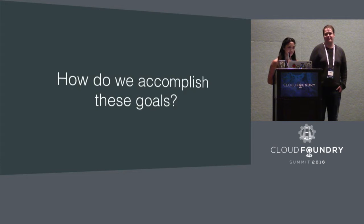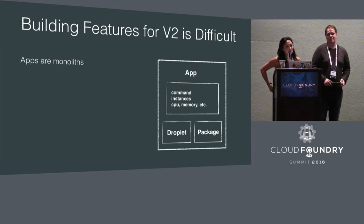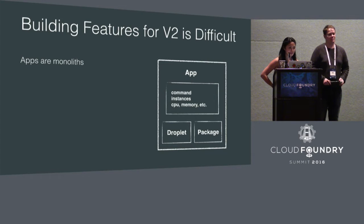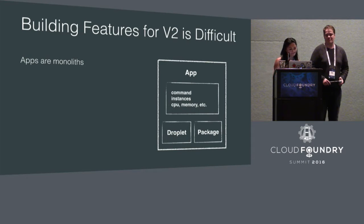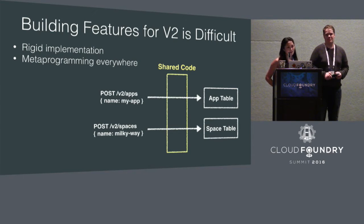So how do we accomplish these goals? We initially wanted to extend the existing API, but we were blocked by overall domain modeling and design. The V2 app is a monolith — it's defined by app configuration like the start command, memory limit, CPU, number of instances, and the droplet in the package. It doesn't really allow for things we value, like the flexibility of implementation or client-side manipulation. There is a metaprogramming layer closely coupled with and shared between the database models, and it can make adding simple features for one API resource a very complex task.